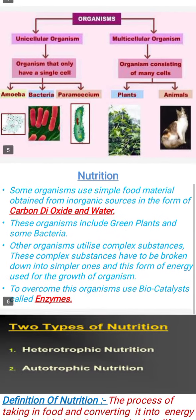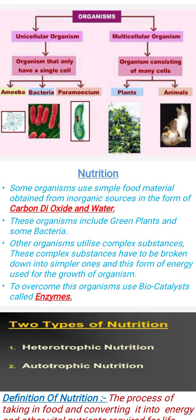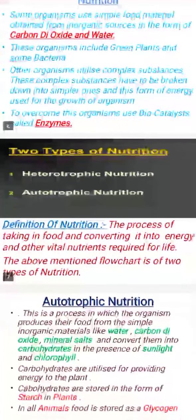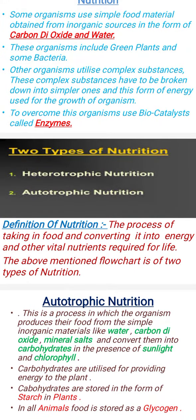Regarding nutrition: some organisms use simple food material obtained from inorganic sources in the form of carbon dioxide and water. These organisms include green plants and some bacteria. Other organisms utilize complex substances, which have to be broken down into simpler ones, and this form of energy is used for the growth of organisms. To facilitate this, organisms use bio-catalysts called enzymes.